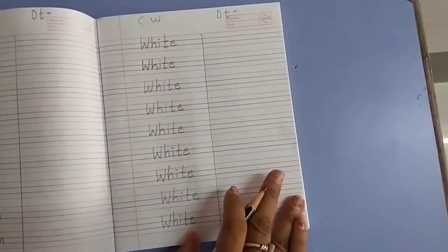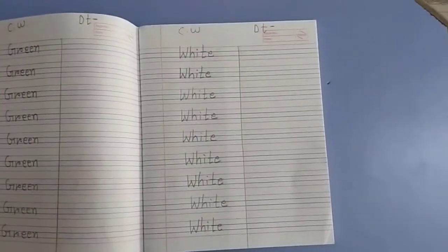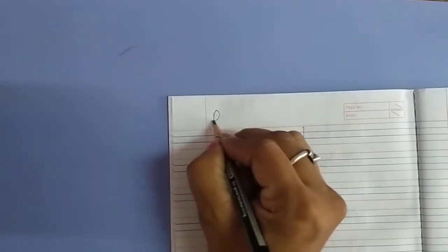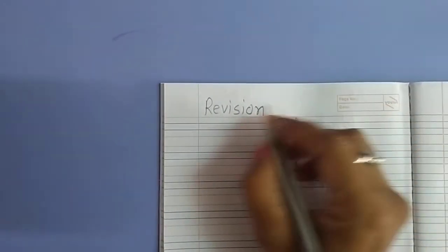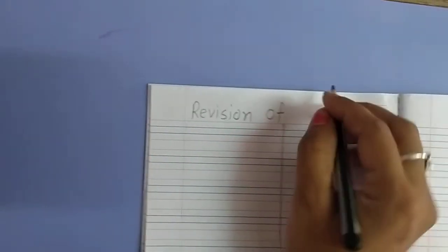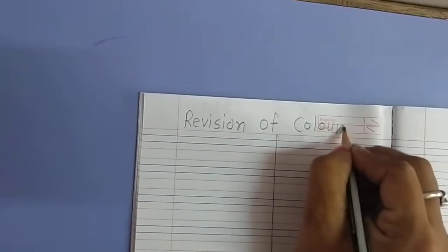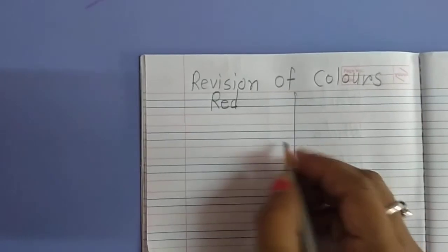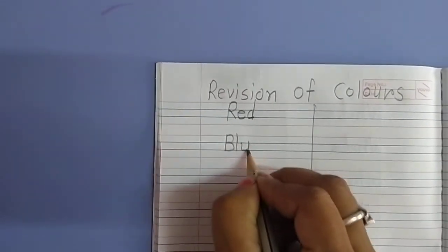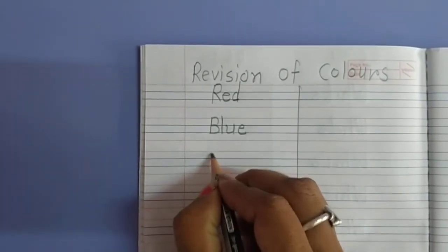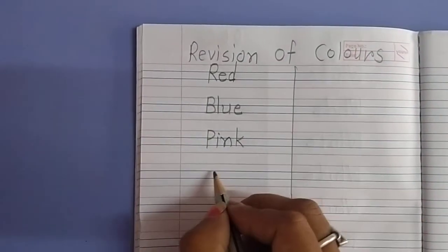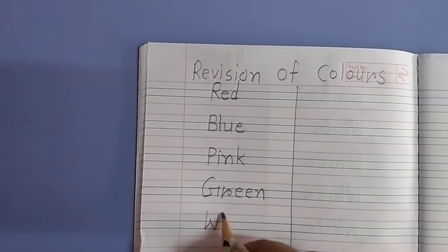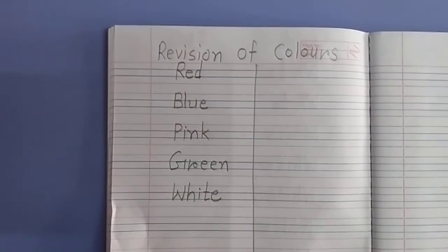Now, complete also this part. We will write the revision of colors. R-E-V-I-S-I-O-N, Revision of Colors, C-O-L-O-U-R-S. First one: Red. Blue, B-L-U-E. Pink, P-I-N-K. Green, G-R-E-E-N. White, W-H-I-T-E. Ok? Thank you.